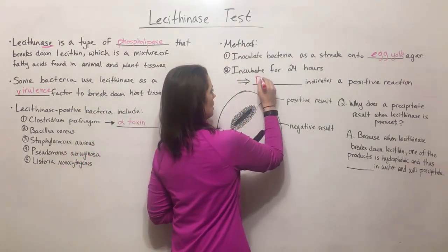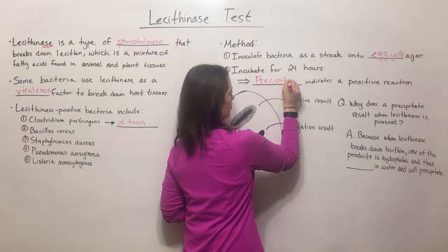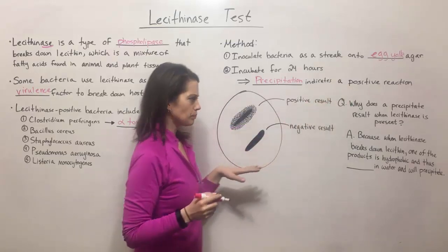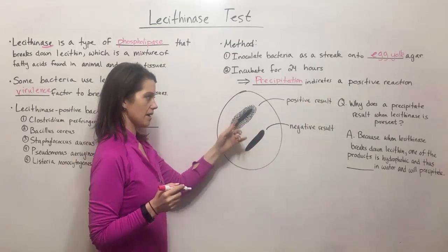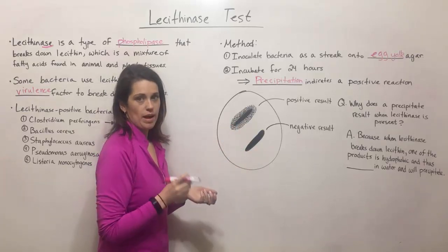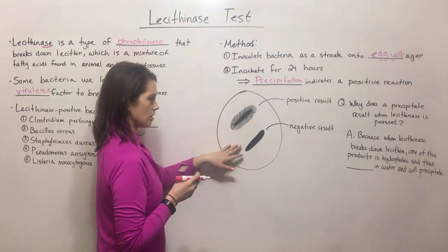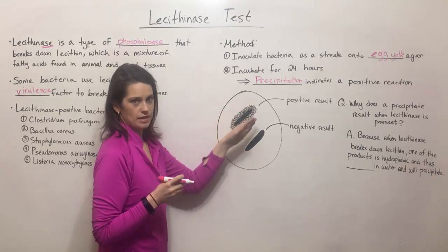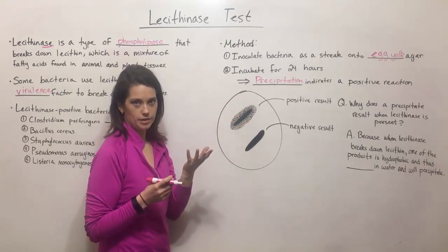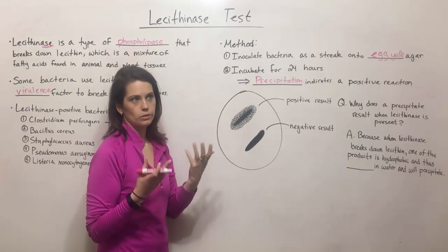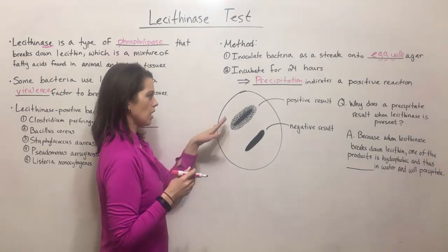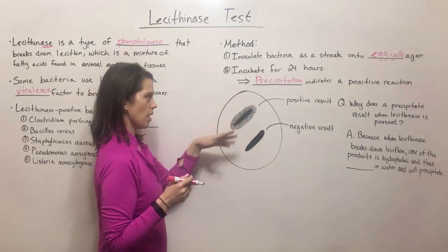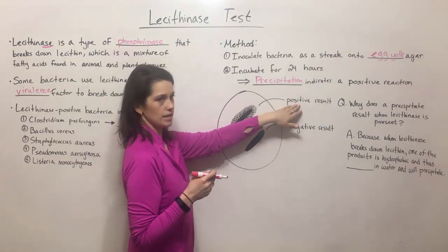If you see precipitation, that indicates a positive reaction. In the drawing here, we have two black streaks indicating where the bacteria were streaked on the plate. If there is no precipitation, that's a negative result. But if you have a zone of precipitation — on an actual egg yolk agar plate it looks like a giant white, somewhat stringy glob in the agar around that streak — that white opaque precipitate indicates a positive result.